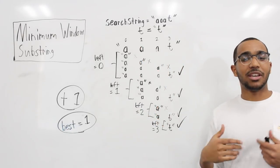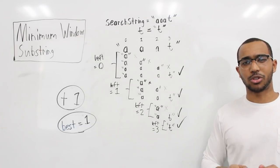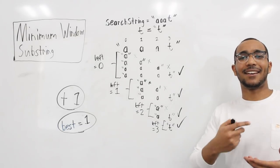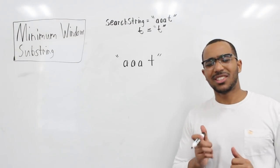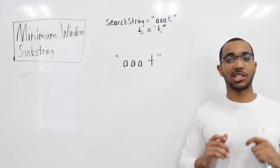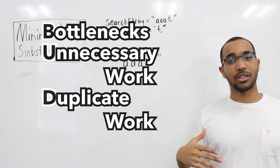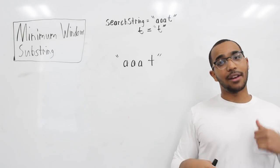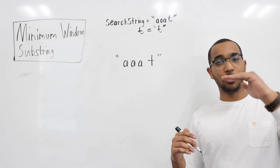Now we need to analyze this approach to see why it's less optimal and how that leads us to the final optimal solution. When optimizing an algorithm, we think about bottlenecks, unnecessary work, and duplicate work — this is from Cracking the Coding Interview. If we can find where we're duplicating work, maybe we can use some auxiliary space to improve the time. If time is high, we lower it by increasing space and keeping auxiliary data to avoid revisiting things we've already touched.